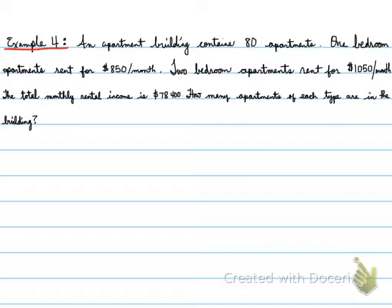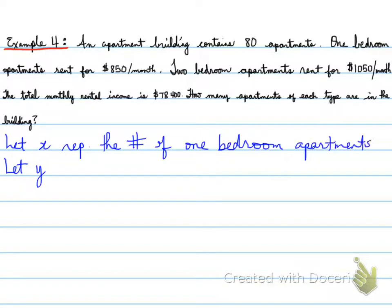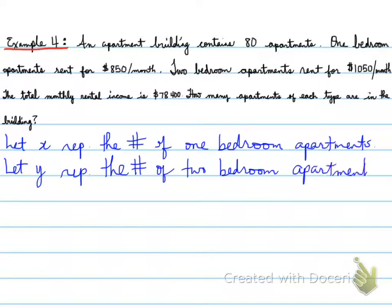We have two totals and some other values indicated. Starting off, we need a let statement introducing our two variables. Let X represent the number of one bedroom apartments, because that's one of the things we don't know. Let Y represent the number of two bedroom apartments — that's also what the question is asking: how many apartments of each type are in the building?